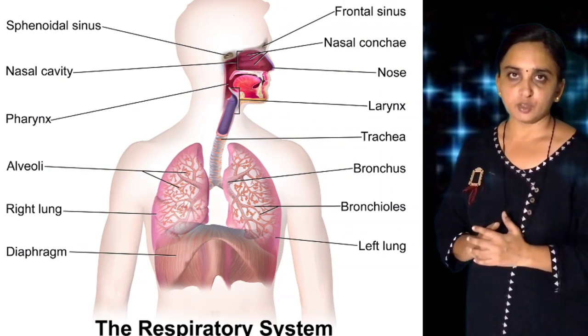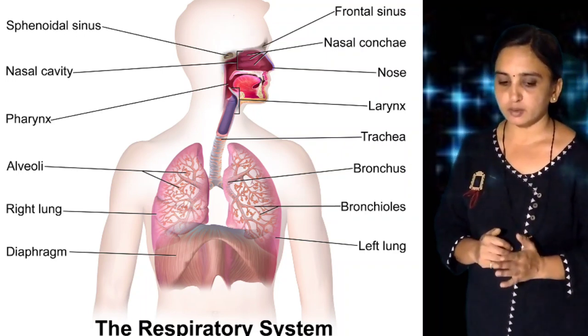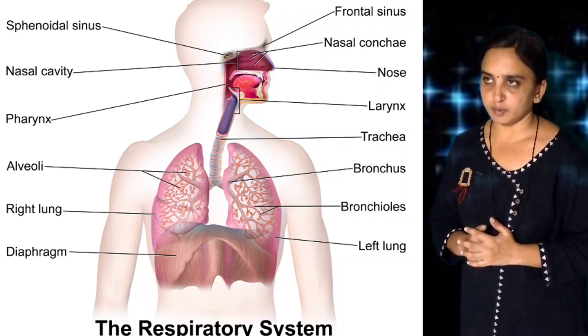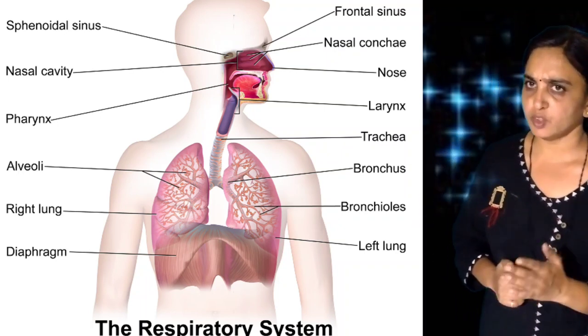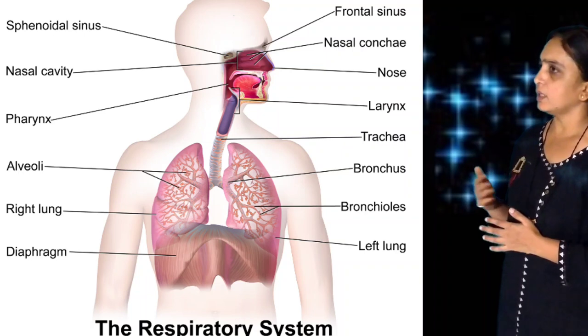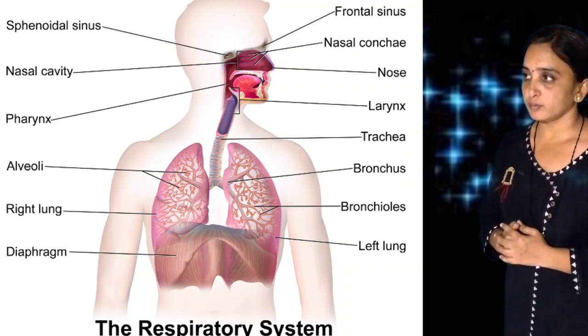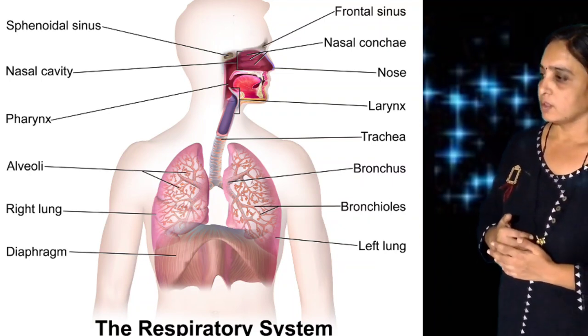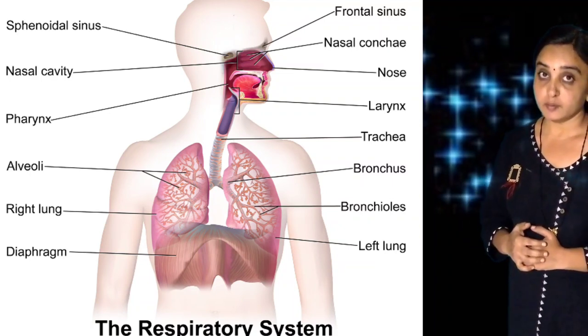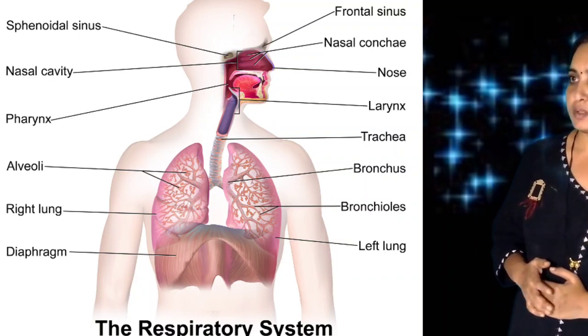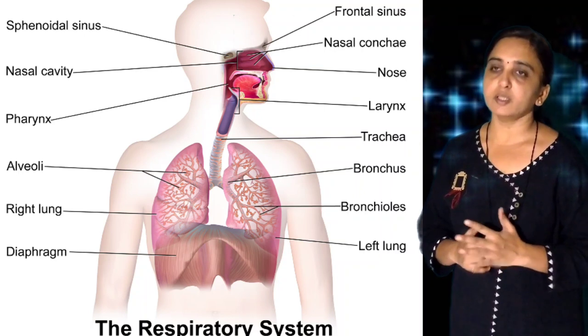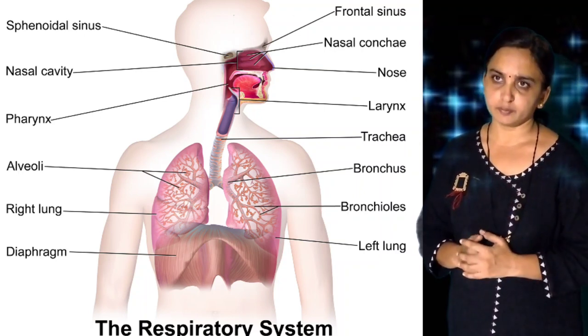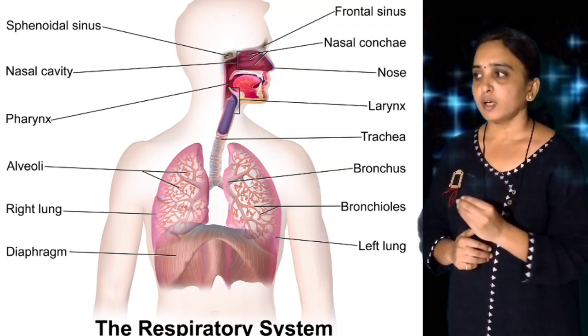When we inhale air, it passes through the nostril, then enters the nasal chamber, then goes into the pharynx, then the larynx, then the trachea, then the bronchi, then secondary bronchi, then tertiary bronchi, then the bronchioles, and finally it reaches the alveoli.